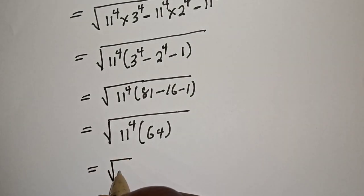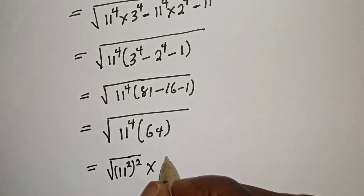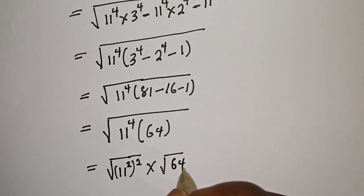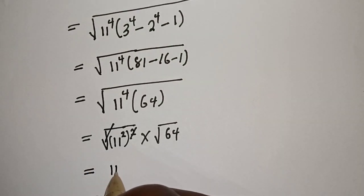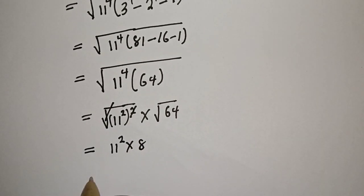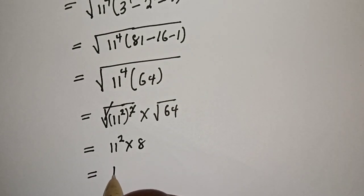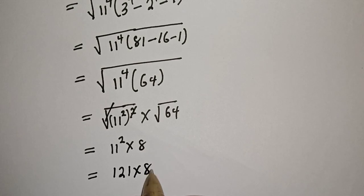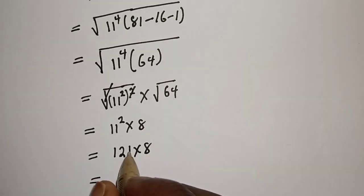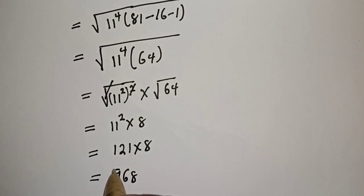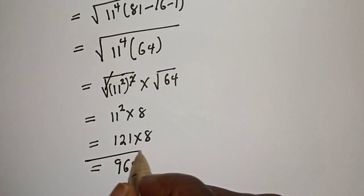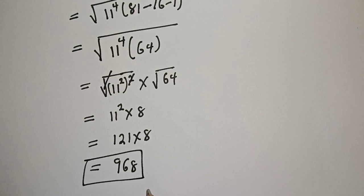Square root of 11 raised to power 4 multiplied by square root of 64. The square root of 11 raised to power 4 equals 11 squared, and square root of 64 is 8. So we have 11 squared is 121, multiplied by 8. 8 times 121 equals 968. This is the final answer.